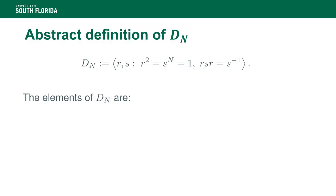We will give several definitions of the dihedral group. First, an abstract definition, where we define it simply by the relationships between two of its generators. We say this is a group generated by r and s that satisfy r squared equals 1, s to the n equals 1. So r and s have order respectively 2 and n in this group, and they satisfy a relationship between each other.